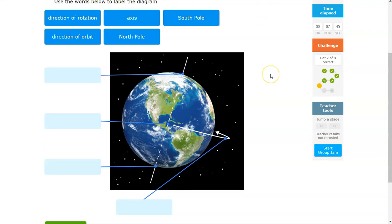I assume most students will be fine with labeling the North Pole and the South Pole. The main tricky question will probably be right here, whether it's going to be direction of rotation or whether it's going to be direction of orbit.